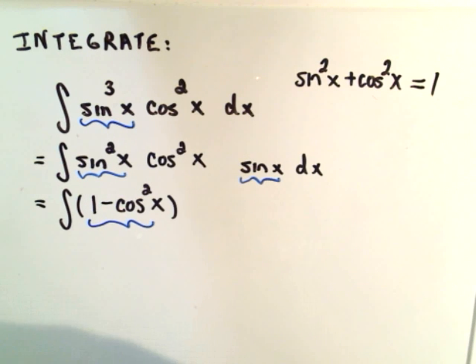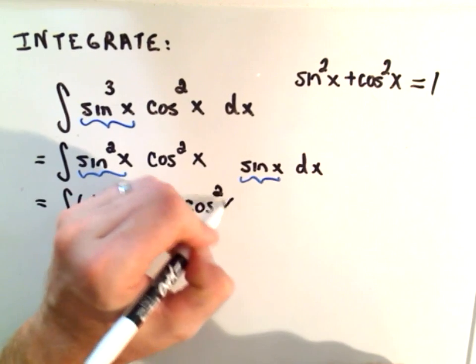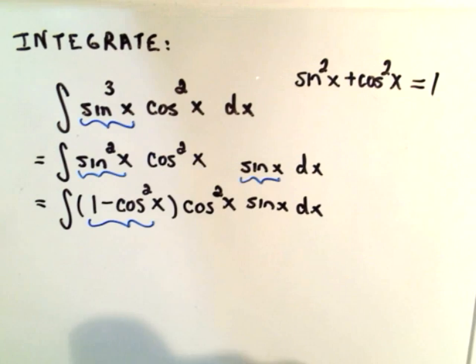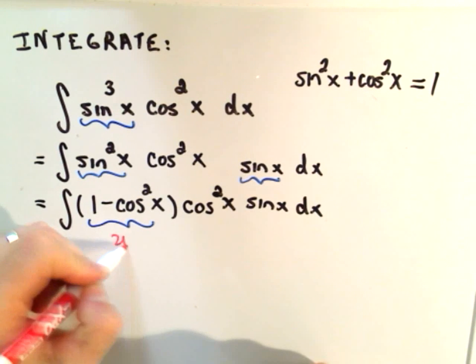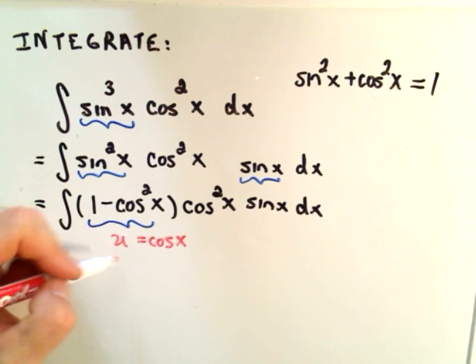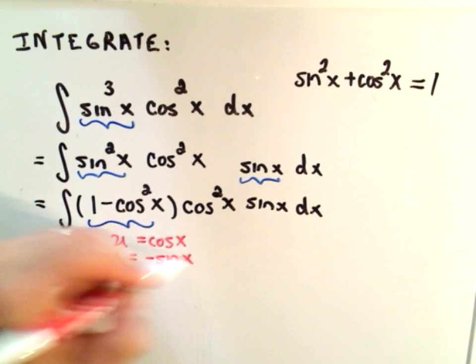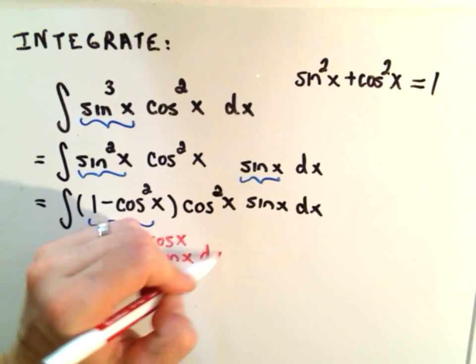There's my original cosine squared, there's my sine x still hanging out. The whole point of doing this is now you can do a u-substitution where you let u equal cosine of x. The derivative of cosine is negative sine of x, so multiply both sides, we'll get negative du is sine x dx.